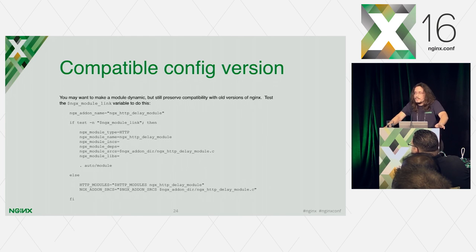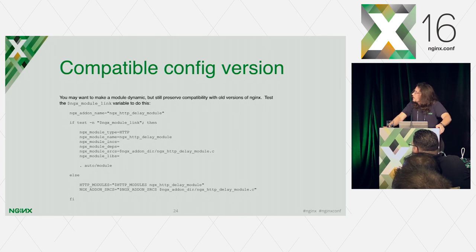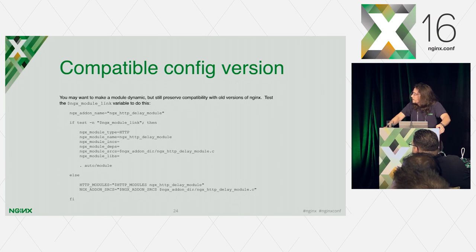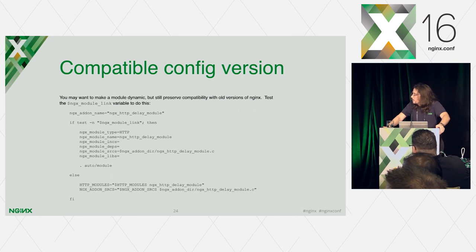In some cases you may want to provide compatibility with previous versions of Nginx. This can be trivially achieved by testing the NGX_MODULE_LINK variable — if it's set, you use the new version; if it's not set, you still use global variables as previously.